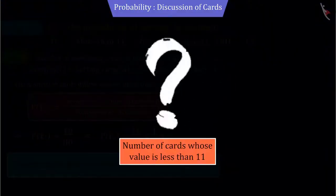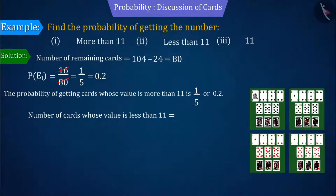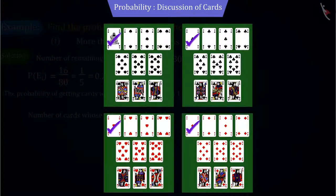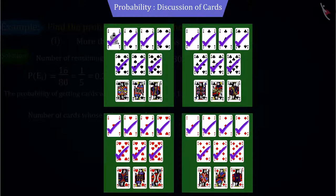Similarly, if we discuss another event, you can see that the number of cards with values less than 11 - that is 1, 2, 3, 4, 8, 9 and 10 - are 56.